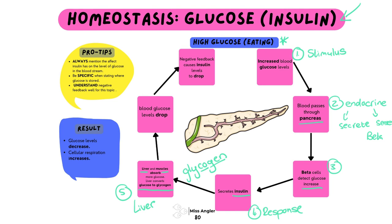The liver has converted all of this excess glucose into glycogen, and what's going to happen next is our blood glucose levels are going to drop. For most schools you could probably stop there, but at grade 12 level you would go to the final step: negative feedback causes insulin to drop, because you never want high levels of hormones all the time. Negative feedback means once the sugar gets low enough, that causes the insulin to also drop and return back to normal.